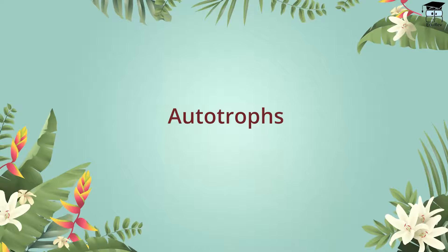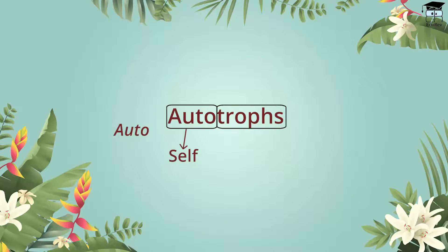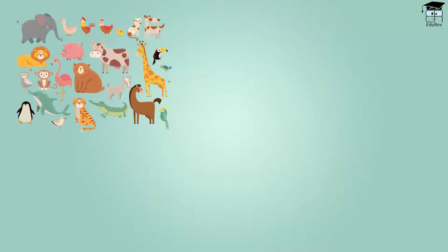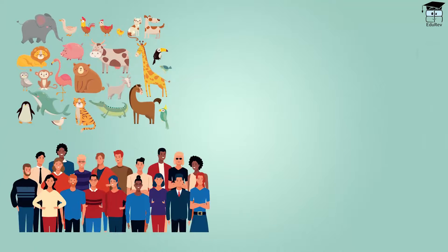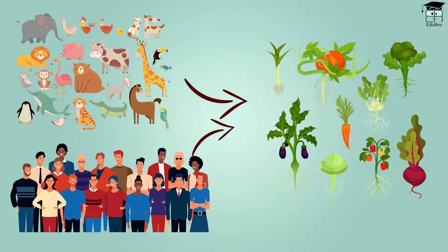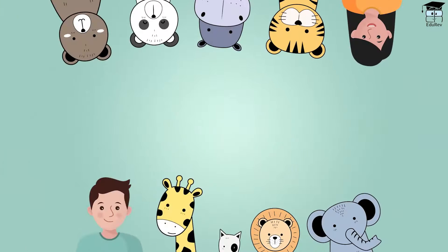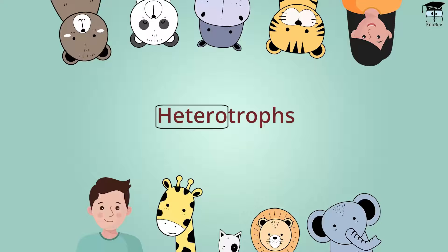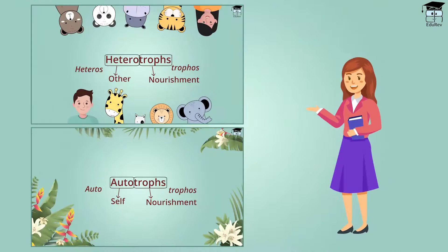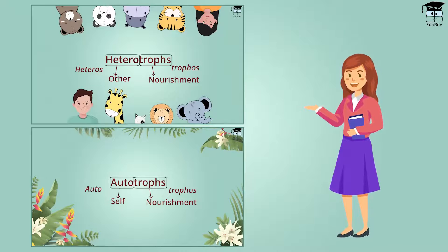The food we cook is actually made by plants. Hence, plants are called autotrophs — where 'auto' means self and 'trophos' means nourishment. All animals, including humans, are dependent on plants for their food and nutrition because we cannot make our own food. Hence, all animals are called heterotrophs — where 'heteros' means other and 'trophos' means nourishment.